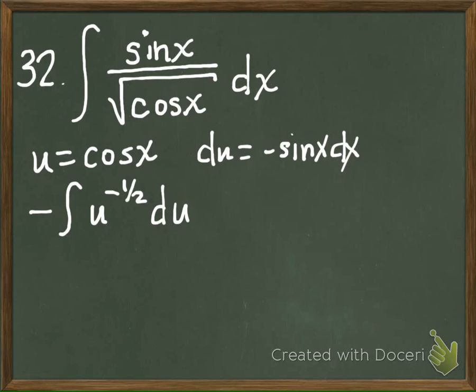All right. How is that going to integrate? Add one and divide by the reciprocal. So you add one, it would be U to the one-half divided by half. So it would be... And we still have our negative, right? Yes.